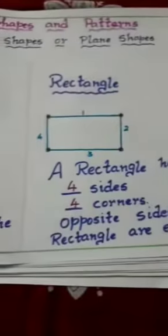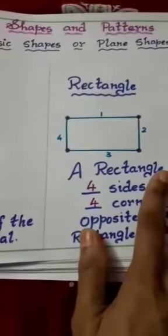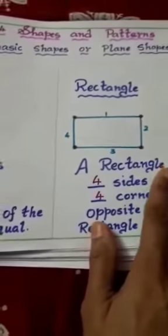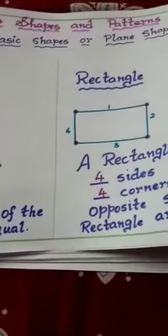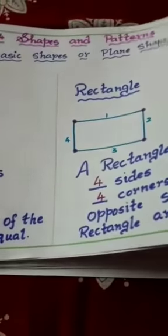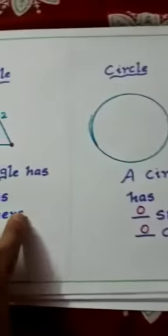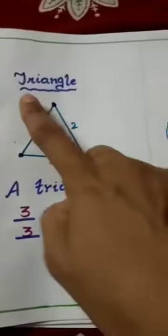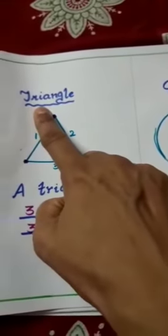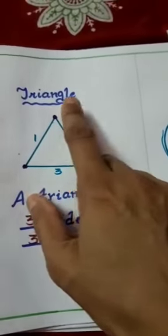Next, we will learn about triangle. Let us learn the spelling of triangle. Tri: T-R-I-A-N-G-L-E. Triangle.